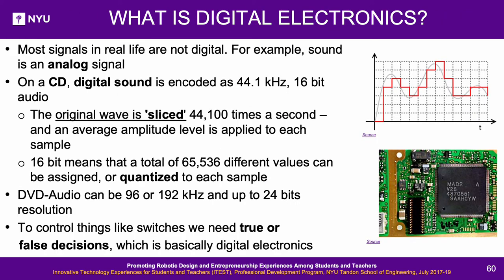What is digital electronics? A digital signal means those signals with a discrete, finite number of levels, unlike analog signals that are continuous. Most signals in real life are not digital — for example, sound is analog, but on a CD digital sound is encoded as 44.1 kHz, 16-bit audio. The original wave is sliced 44,100 times per second, with 16-bit meaning 65,536 different values can be assigned to each sample. DVD audio can be 96 or 192 kHz and up to 24-bit resolution. To control things like switches we need true-or-false decisions, which is basically digital electronics.